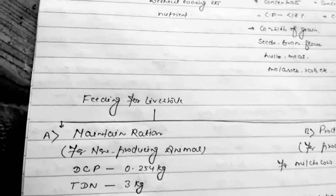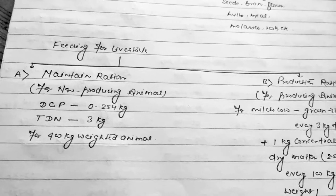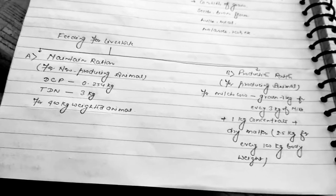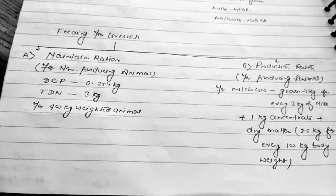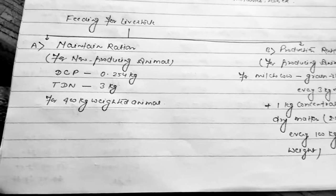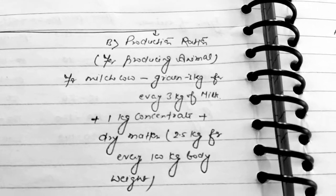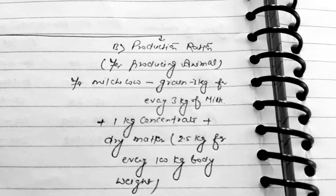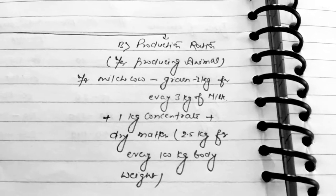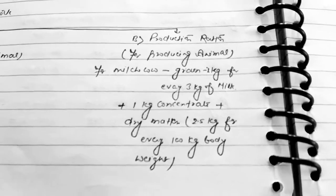The feeding process of livestock consists of two types of ration: maintenance ration and production ration. Maintenance ration is provided for non-producing animals, and production ration is provided for producing animals. Maintenance ration should contain approximately 0.25 kg digestible crude protein and 3 kg total digestible nutrients for a 400 kg animal. For production ration, grain must be 1 kg for every 3 kg of milk produced, plus 1 kg of concentrate, and dry matter should be provided at 2.5 kg for every 100 kg body weight.